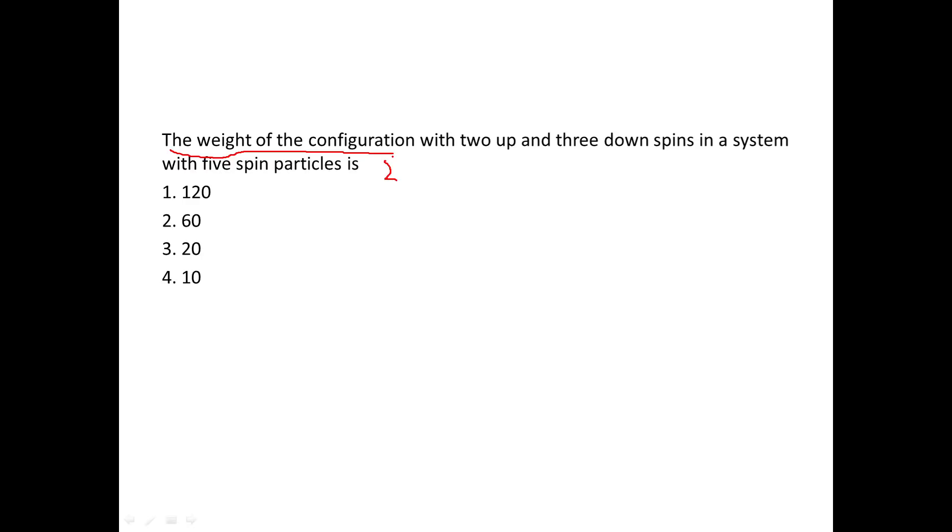The weight of the configuration is a statistical term meaning the number of ways of arrangement. So the weight of the configuration is nothing but the number of ways of arranging something. The question asks for the weight of the configuration with two up and three down spins in a system with five spin particles.